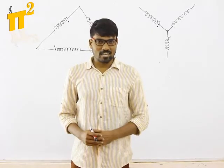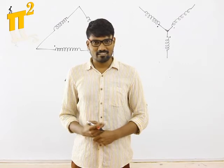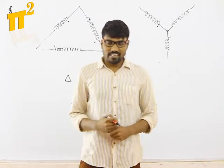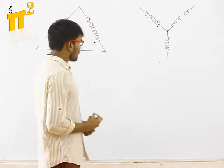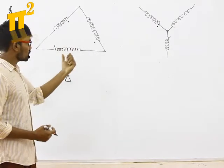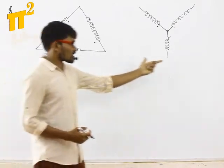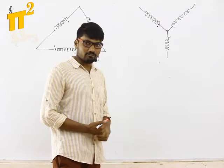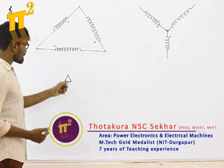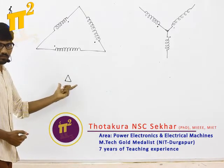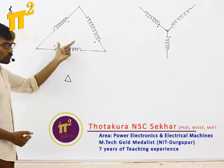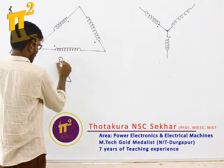Hello everyone! Today I am here with another interesting fact which every electrical engineer should know. In electrical we quite often come across these two connections. I hope you recognize these two. This is delta connection and this is star connection. We know this is called as delta connection because the shape is like a delta — the symbol delta in mathematics — so the shape just resembles this.